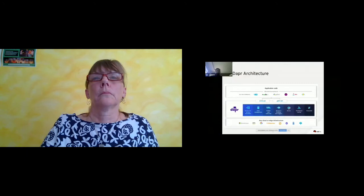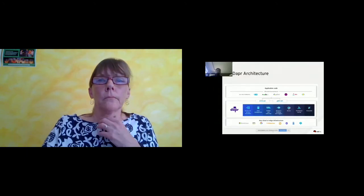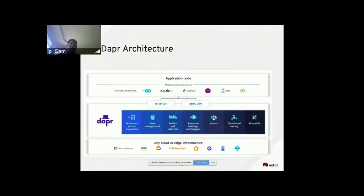In the DAPR architecture, you can see the application code at the top. It supports any type of framework — Golang, Node.js, Python, Java, Ruby, C#. You talk to the middle-tier DAPR runtime using HTTP API or gRPC API, then interact with all these different components in DAPR. DAPR then talks to the lower layer cloud services using AWS, Google Cloud, Microsoft, and so on.